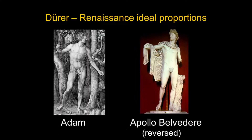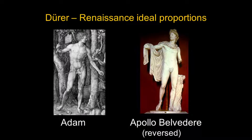Dürer is interested in the ideal proportions of human beings in Renaissance art. Where did he get the figure of Adam? He probably didn't get down to Rome to see the Apollo Belvedere — though there were drawings and engravings made of it. It was discovered in the late 15th century and considered the epitome of manly beauty and perfect proportions. Dürer used that, or possibly a drawing or engraving of it, as his Adam — they have the same proportions and pretty much the same pose.